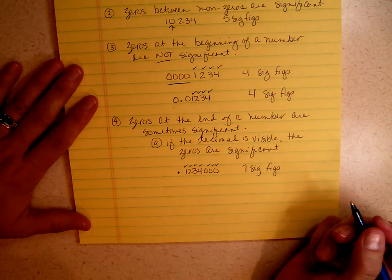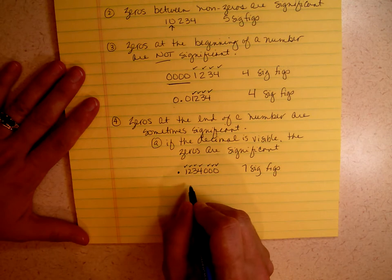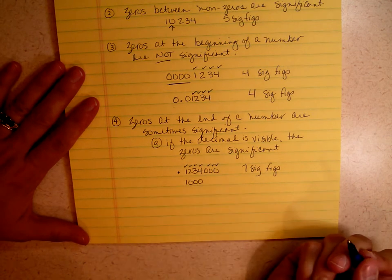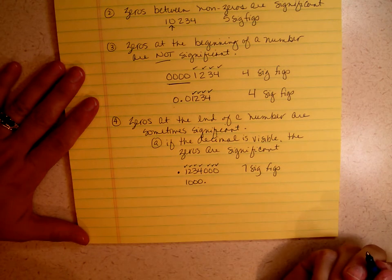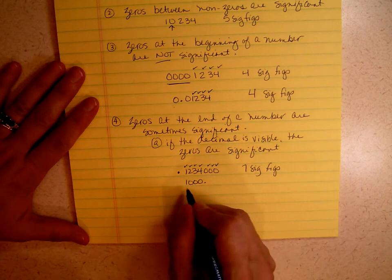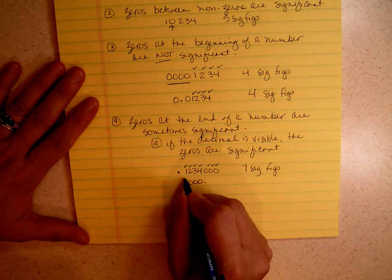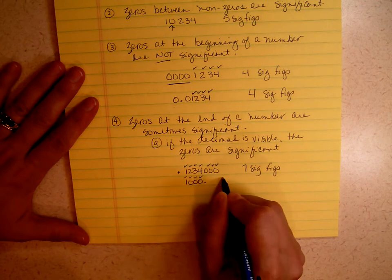What happens if I have the number 1000 with the decimal afterwards? The decimal is showing. Those zeros are at the end. The decimal is showing, so I have 1, 2, 3, 4 sig figs.